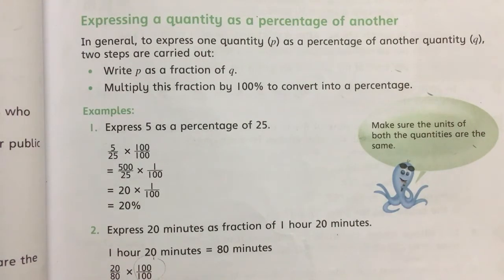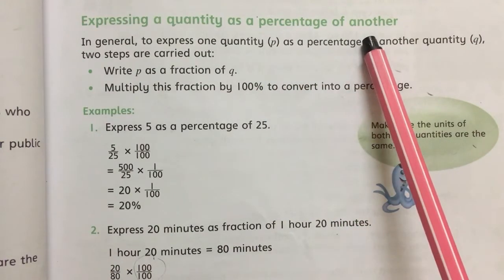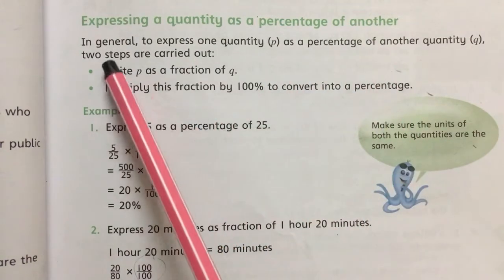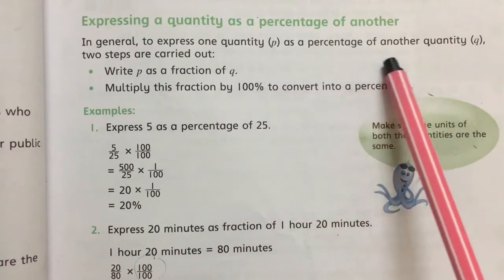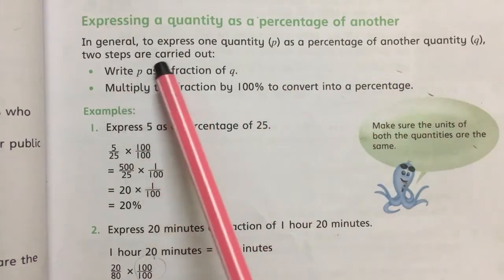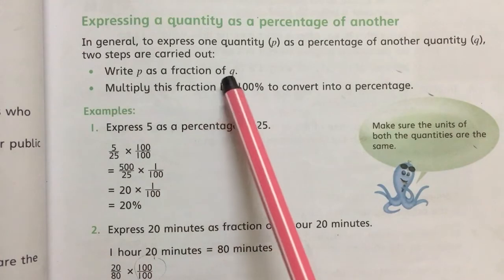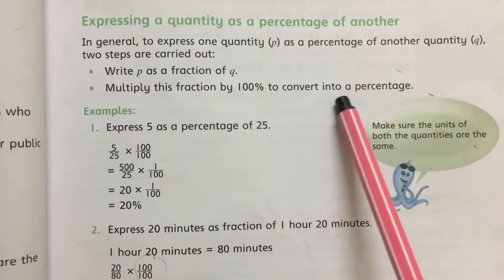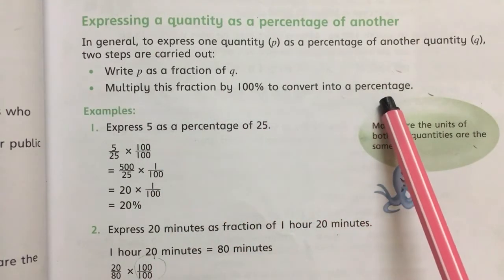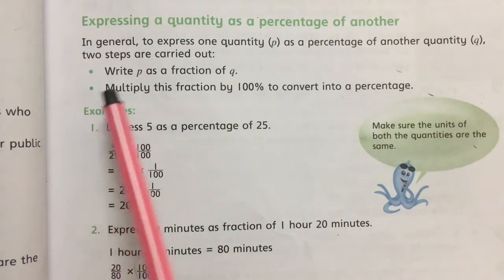Assalamu alaikum, Grade 6. Today our topic is expressing a quantity as a percentage of another. In general, to express one quantity p as a percentage of another quantity q, two steps are carried out: write p as a fraction of q, then multiply this fraction by 100 percent to convert it into a percentage.